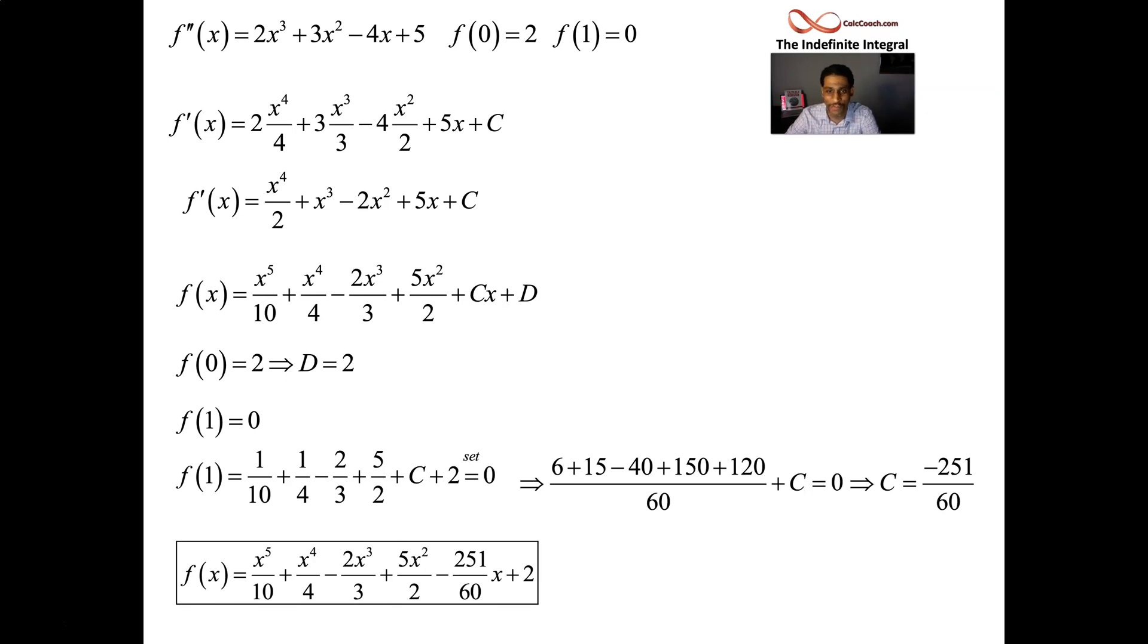We have the d already. It's 2. That's our second derivative. Given that second derivative, that's the function. Who will not only have that second derivative, but will go through those two points.